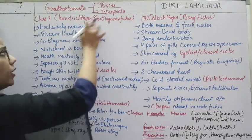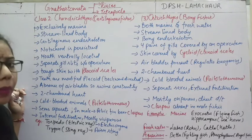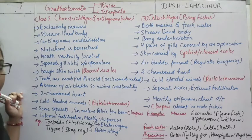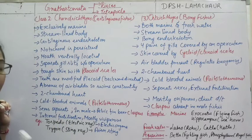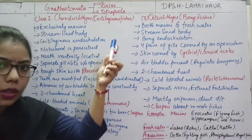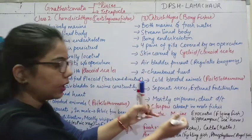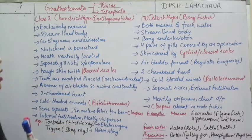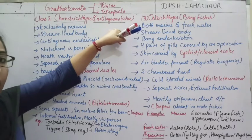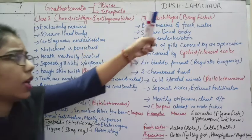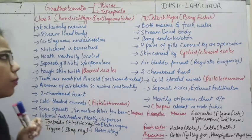Pisces superclass is divided into two classes: Chondrichthyes and Osteichthyes. Before these there was Placodermi, which is a fossil group and not studied now. Chondrichthyes are cartilaginous fishes — their endoskeleton is made of cartilage. Osteichthyes are bony fishes — their endoskeleton is made of bones. Both come under true fishes.